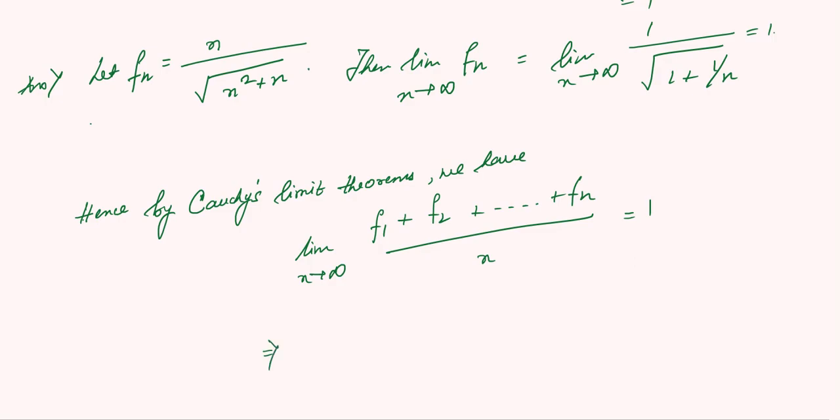And this is equal to, or this can imply, limit n tends to infinity of [n by root of (n squared plus 1) plus n by root of (n squared plus 2) plus dot dot dot n by (n squared plus n)],